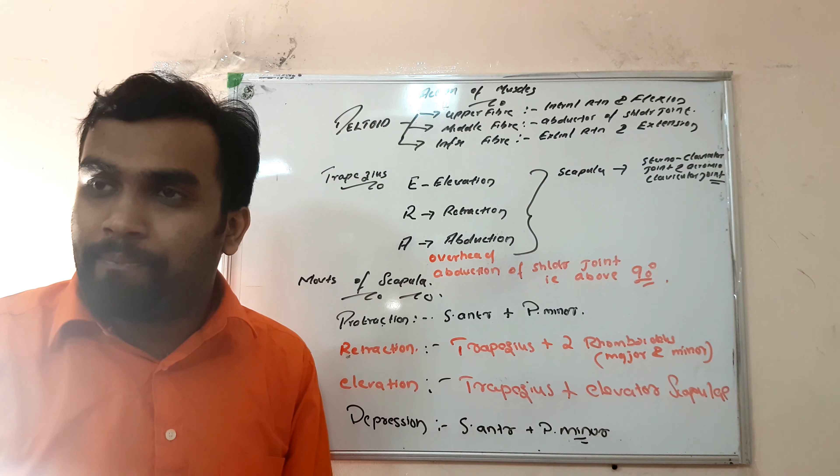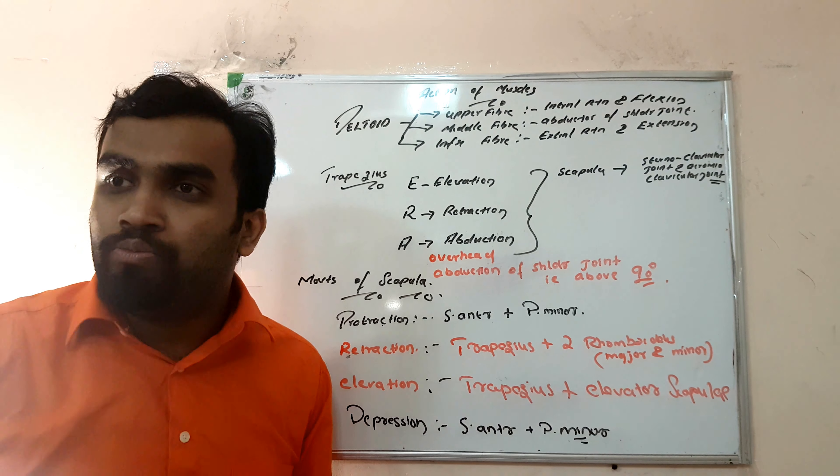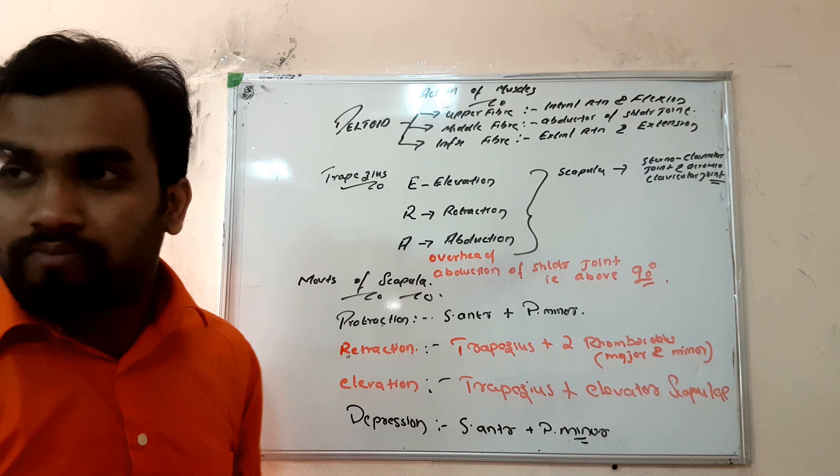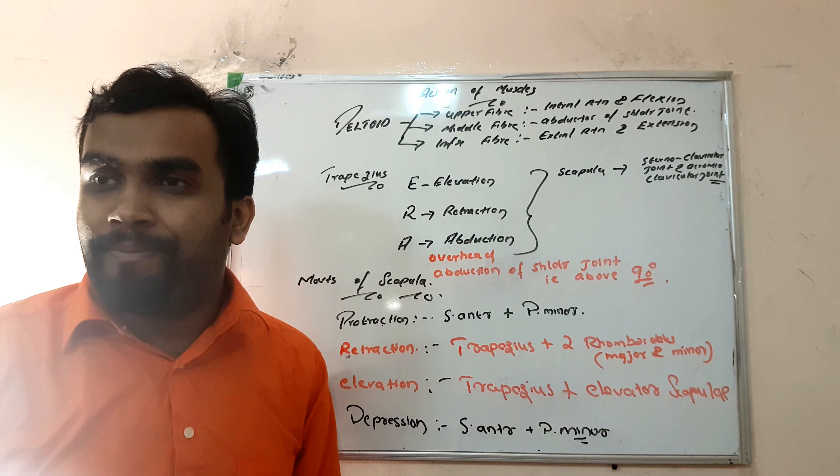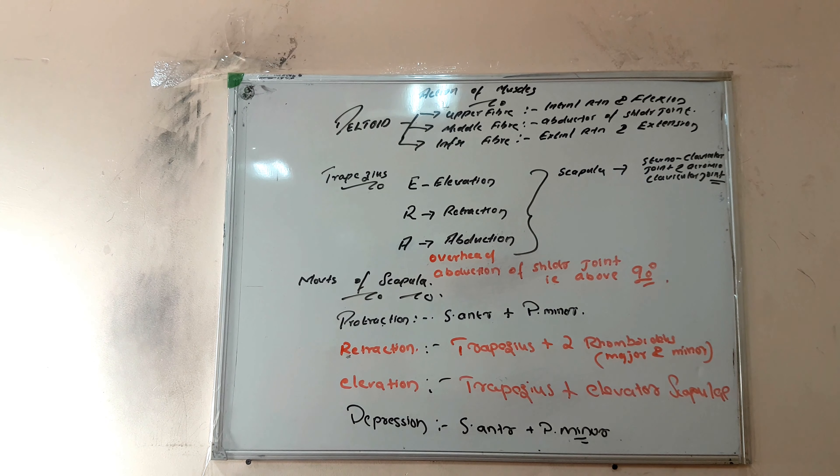Now, the abduction function of trapezius - this is overhead abduction of the shoulder joint, that is above 90 degrees. Remember: trapezius helps in overhead abduction of the shoulder joint, which is above 90 degrees.